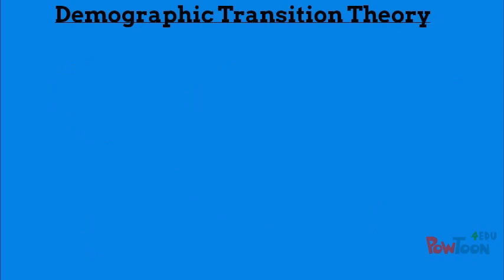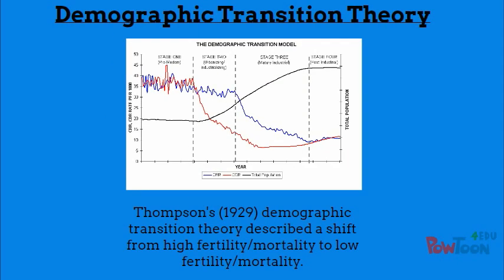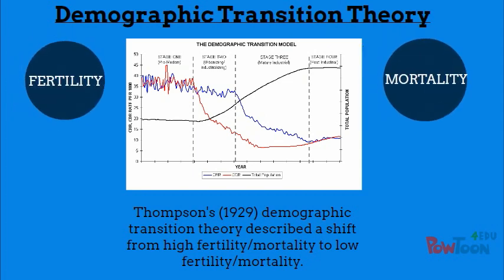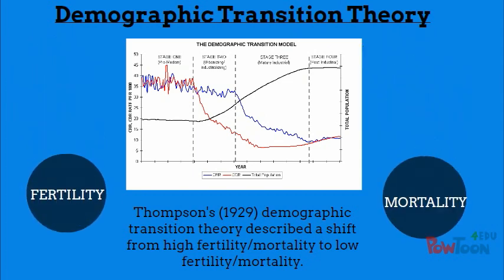In 1929, American demographer Warren Thompson posited the demographic transition theory. This modeled a shift from high fertility and high mortality to low fertility and low mortality as a result of industrialization in developing nations.